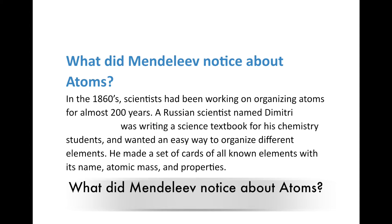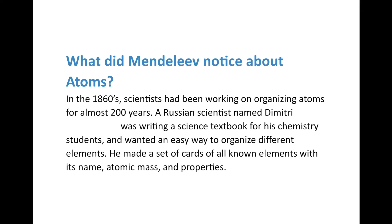In the 1860s, scientists had been working on organizing atoms for almost 200 years. They figured that if you could organize them, you could understand them better. A Russian scientist by the name of Dmitri Mendeleev was writing a science textbook for his chemistry students, and he wanted an easy way to organize the different elements. Even back then in the 1860s, scientists and teachers were trying to figure out ways to get students to understand things better.